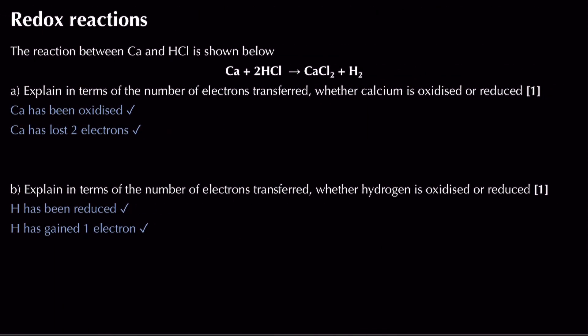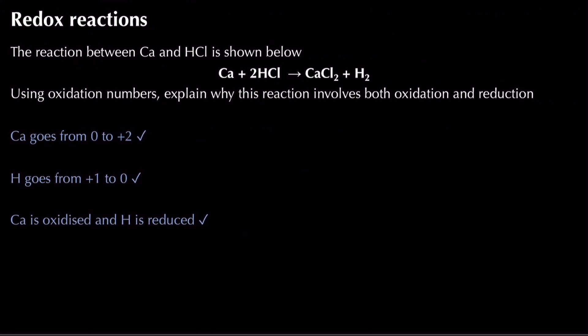You may come across questions asking you to explain, in terms of the number of electrons transferred, whether a substance has been oxidised or reduced. For calcium: it loses two electrons, so it is oxidised. For hydrogen: it has been reduced because each hydrogen atom gains one electron. Remember — when discussing electrons transferred, always refer to one atom, so don't say two electrons for hydrogen.